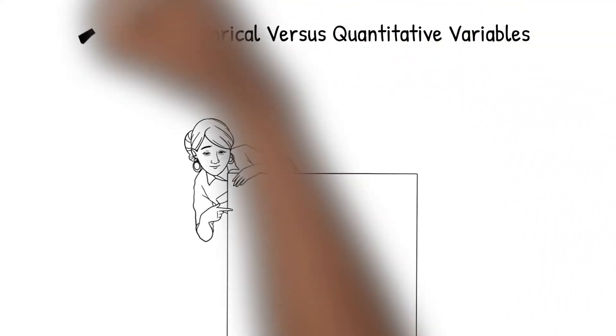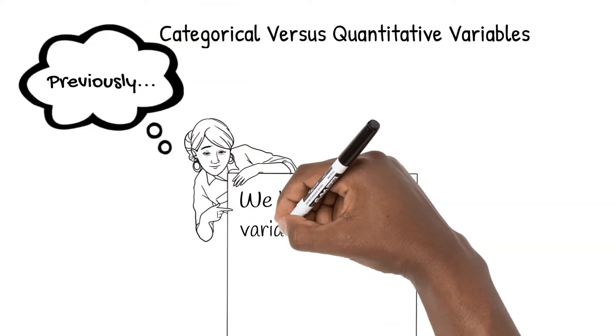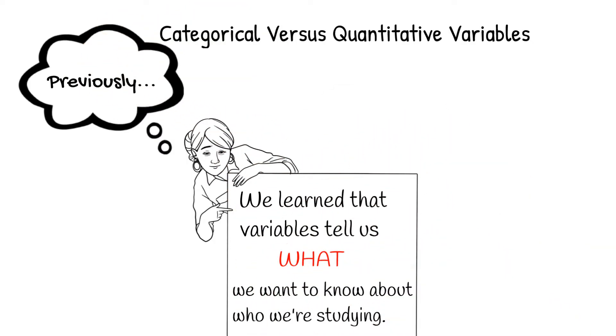In this video, we'll be looking at categorical versus quantitative variables. Previously, we learned that variables tell us what we want to know about who we're studying.